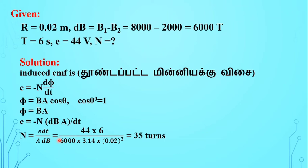This is equal to 44 into 6, and then dB is nothing but change in the magnetic field, 8000 minus 2000 is equal to 6000, into the area π r squared. π is equal to 3.14, r is equal to 0.02 the whole squared. So finally we get 35 turns.